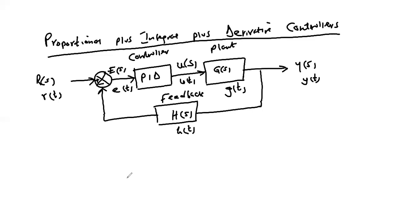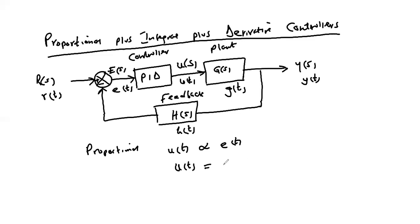Given the block diagram representation of the system, our concern is the relationship between the error signal and the control signal. When we talk of the proportional plus integral plus derivative control action, we are referring to the relationship between the control signal and the error signal. For example, for a proportional controller, the control signal u(t) equals Kp·e(t), where Kp is the proportional gain constant.